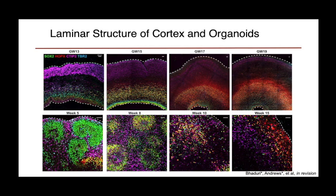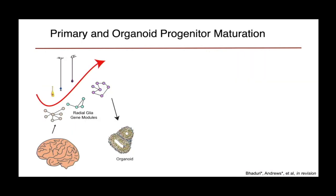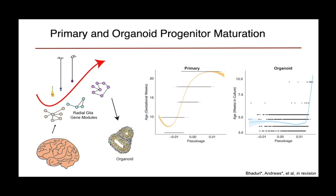We wanted to explore how this is reflected at the level of molecular maturation. Using our data, we took the radial glia to generate weighted gene co-expression networks correlated to molecular identity in a training set. We then applied these networks to organoids. There was a strong correlation between the pseudo-age metric and actual age in primary samples, but no correlation in organoids until the switch to gliogenesis, suggesting they recapitulate the major transition from neurogenesis to gliogenesis but not the important molecular maturation trajectories during neurogenesis.